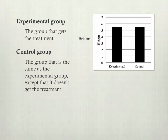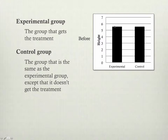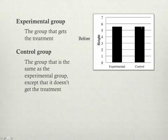The experimental group are the ones who are going to get the shrink ray. And the control group — those are the other participants — they have to start off with the same height. So before the experiment, we want the height to be the same. We want the groups to be exactly the same if possible.